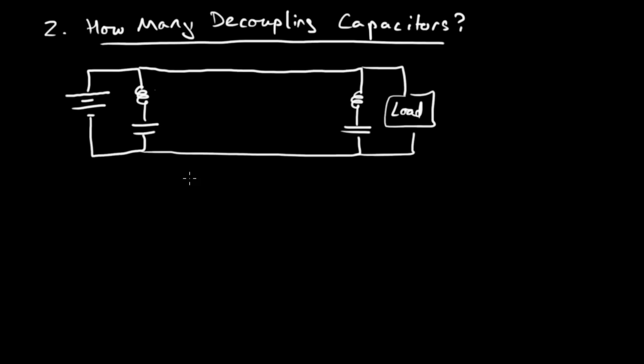Here I've drawn a decoupling circuit where we have the bulk decoupling capacitor and the local decoupling capacitor near the load. And let's say we're using the same package size for both. So maybe we're using 0805 surface mount technology packages.